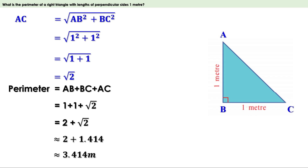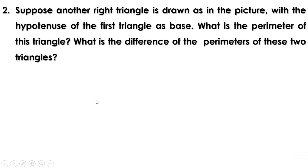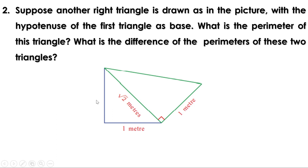If you need precision up to centimeters, use √2 ≈ 1.41. If you need only one decimal place, take √2 ≈ 1.4. So the perimeter is approximately 3.4 m, or approximately 3.41 m, or approximately 3.414 m. Now, suppose another right triangle is drawn with the hypotenuse of the first triangle as its base — what is the perimeter of this triangle?